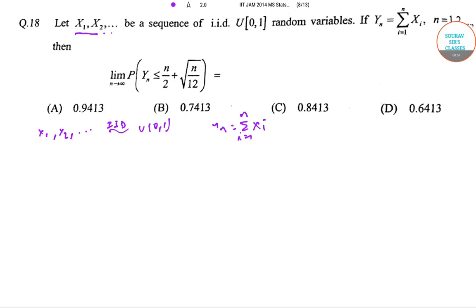First let us find out the expectation of Yn, which equals summation i=1 to n of E[Xi]. Now we know that for a uniform random variable, the mean is equal to (a+b)/2.